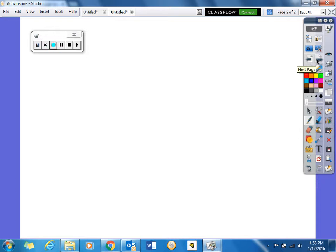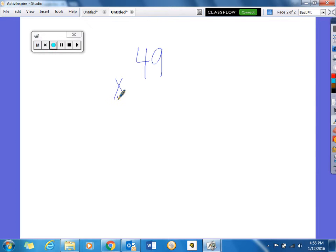For the next problem, we're going to look at 49 times 3. So again, we're going to start in our ones place with 3 times 9, which equals 27. So we're going to break apart that number again, put our 7 down here, our 2 up here for 27.